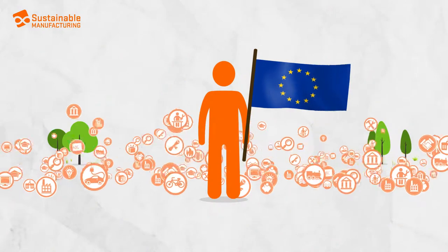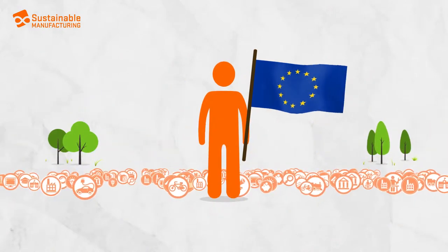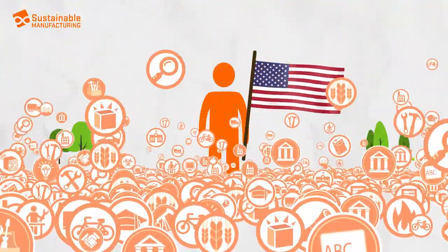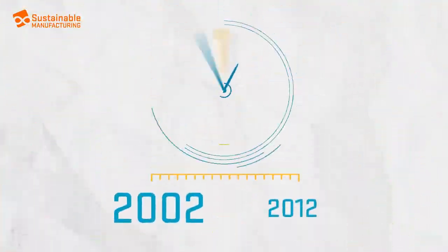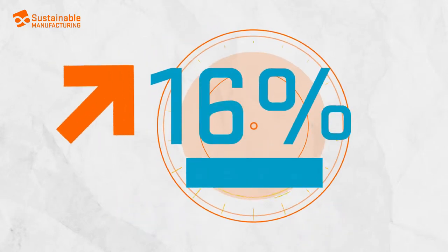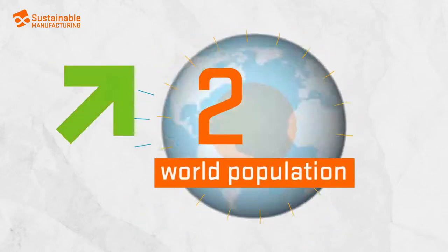Every European owns an average of 10,000 objects. Every American owns roughly more than twice as much. From 2002 to 2012, energy use rose by 16% per capita, while the world's population grew by 12%.